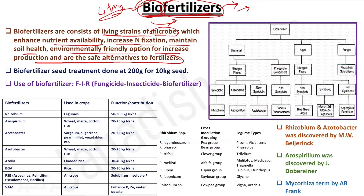We need a combined approach. We cannot switch directly from inorganic fertilizer application to only organic — like only applying manure, compost, or FYM — without inorganic fertilizer. We need an integrated approach where we can use integrated nutrient management and judicious use of different sources of nutrient management. That is why we need to apply biofertilizer.